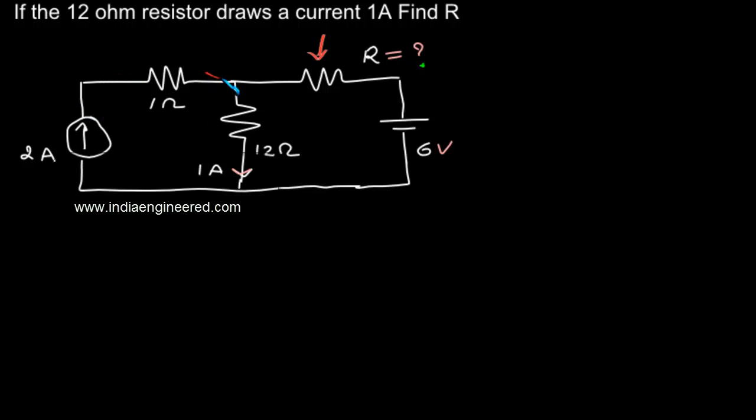We have 2 ampere coming here and it's given that 1 ampere flows downwards. When 1 ampere current flows through 12 ohm, it is clear that the potential here will be 12 volt.